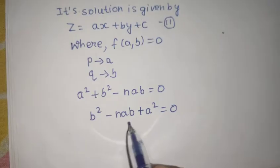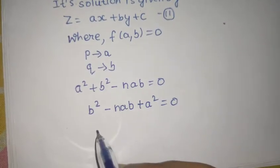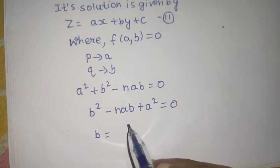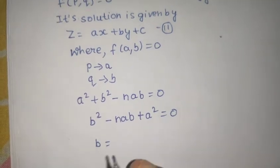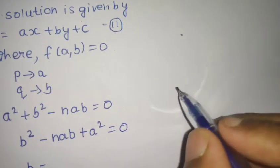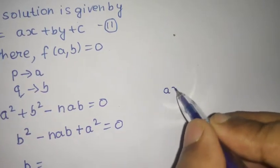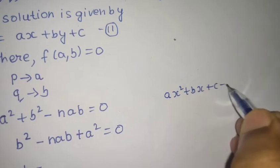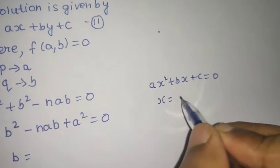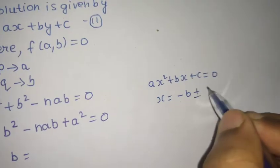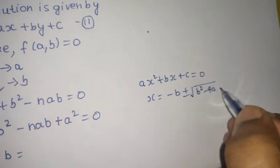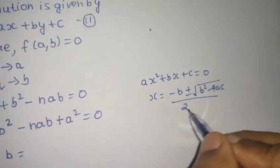It is a quadratic in B, so we can find its solution. So, B equals to... The basic format was there: AX square plus BX plus C equals to 0. So, there we had X equals to minus B plus minus under root B square minus 4AC by 2A.